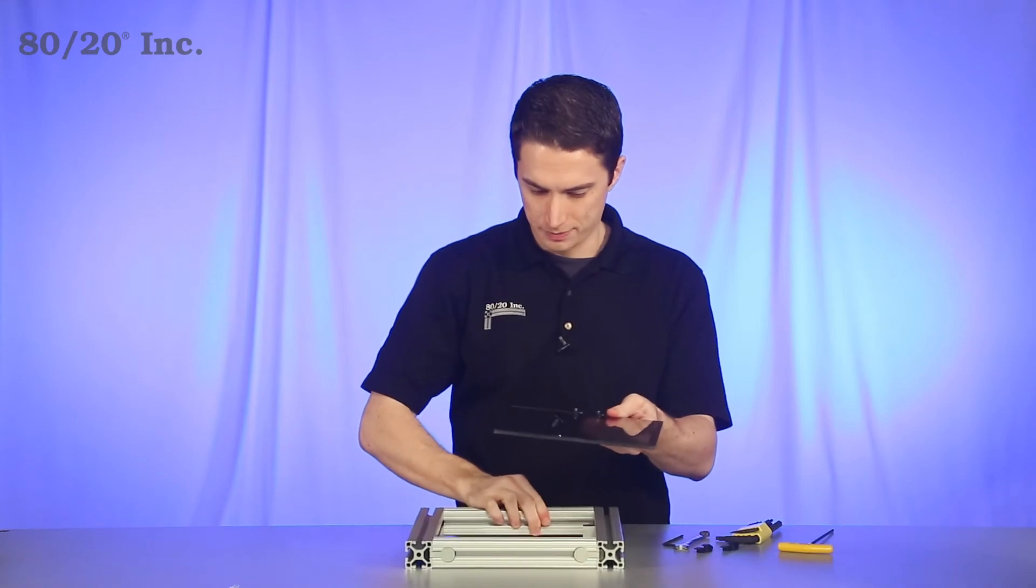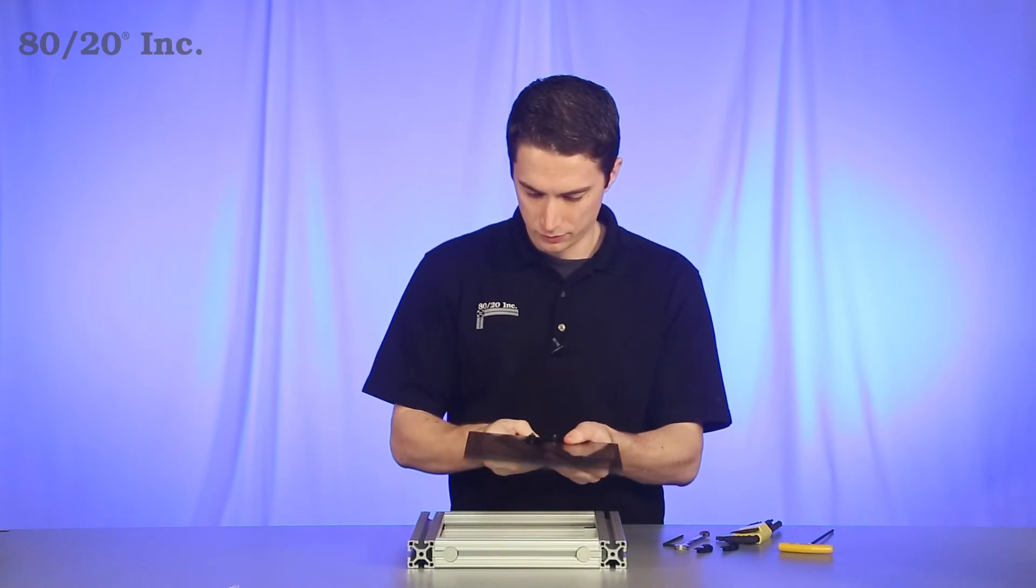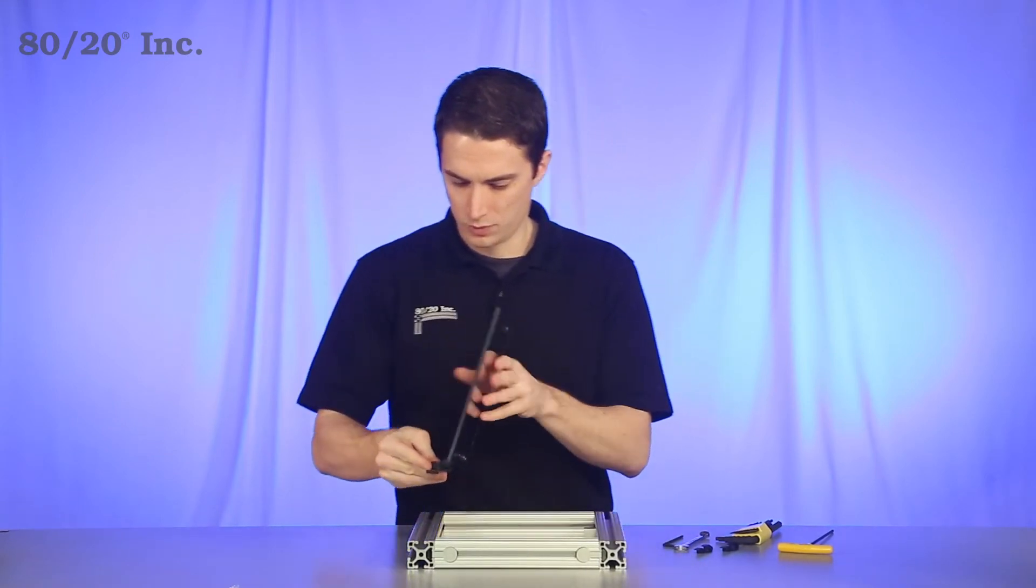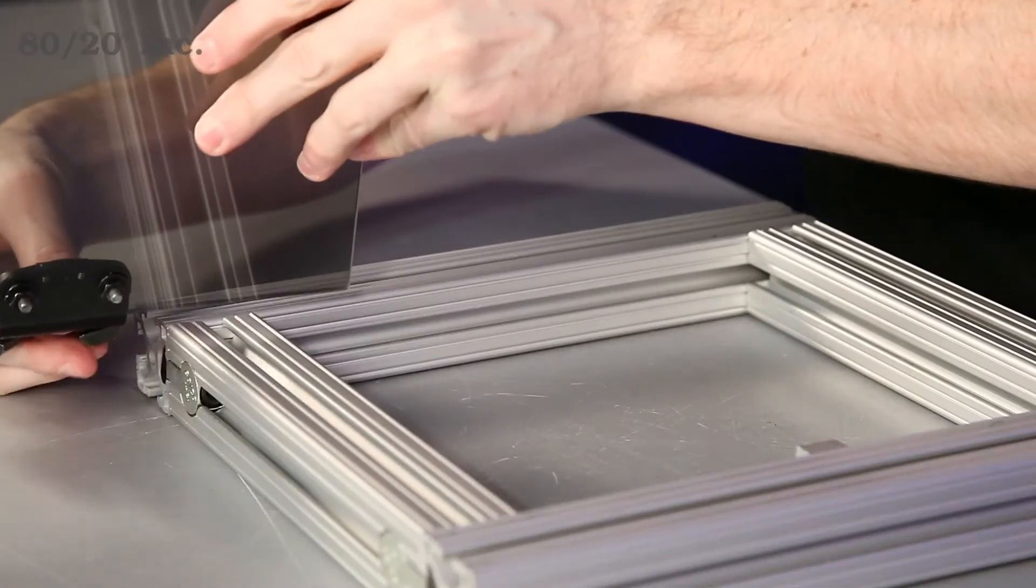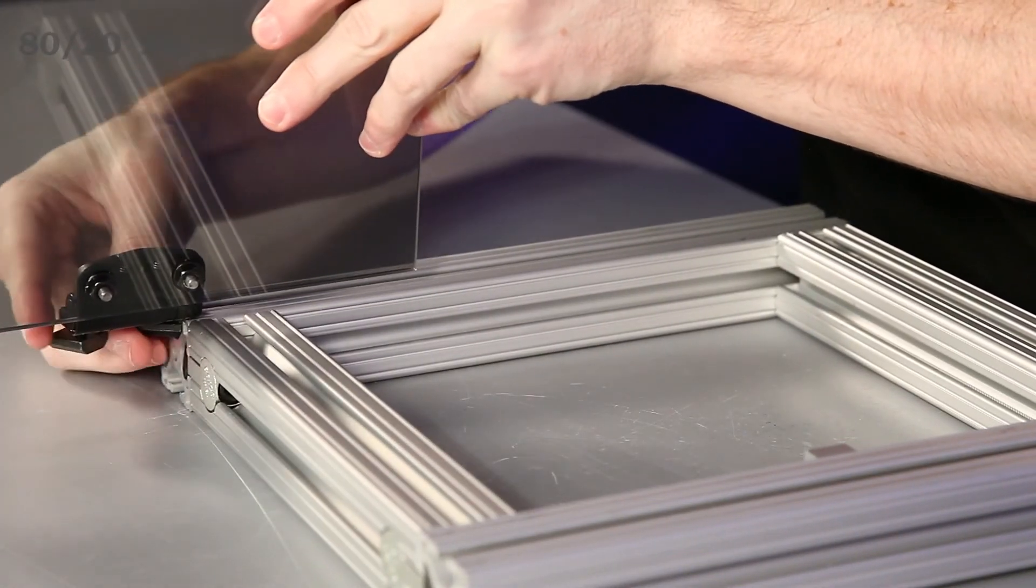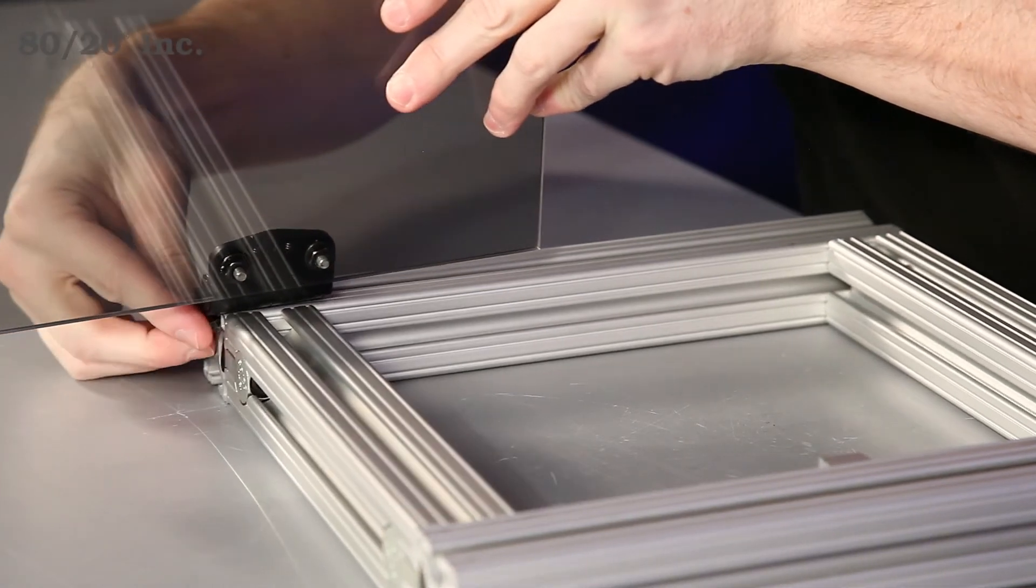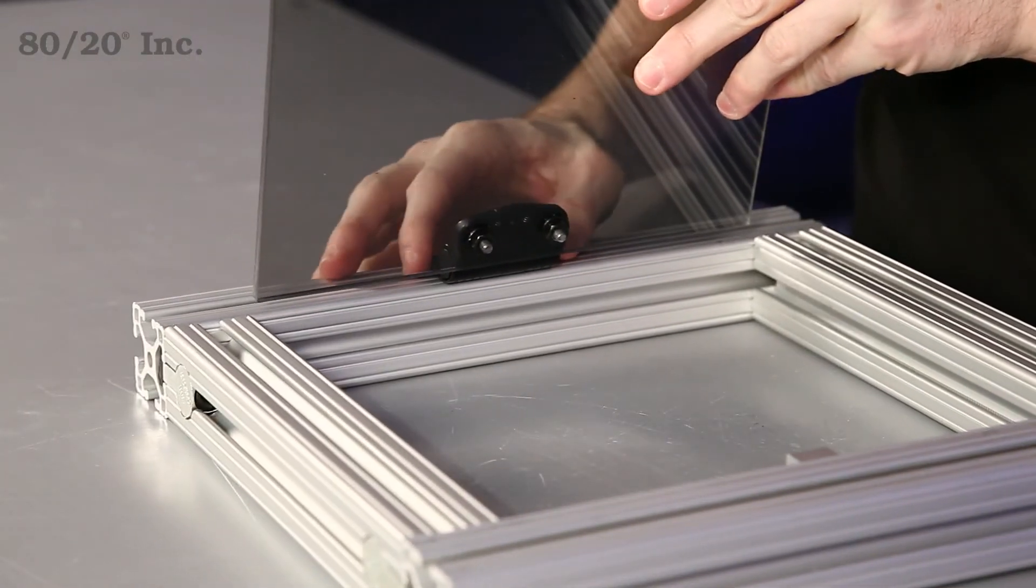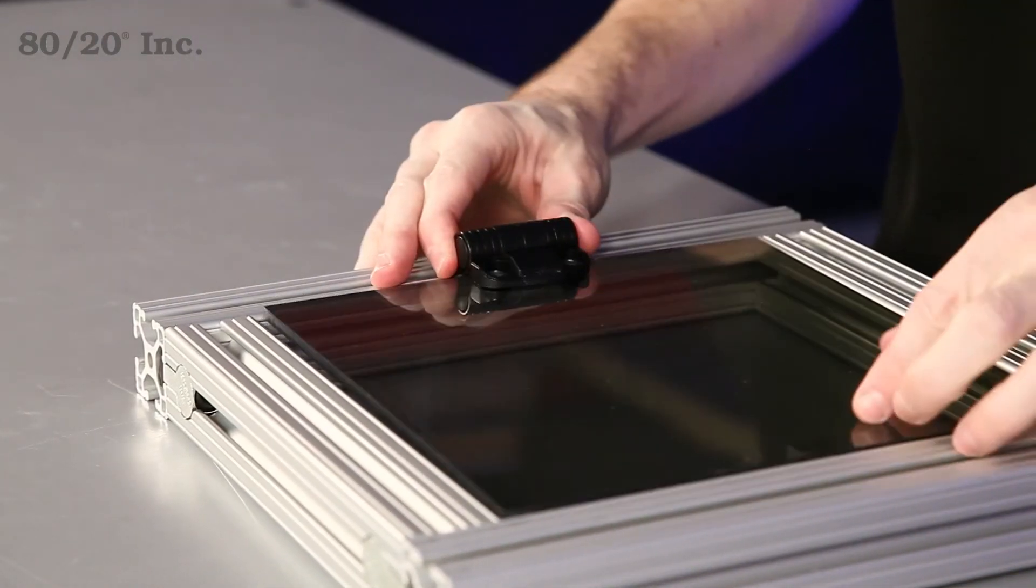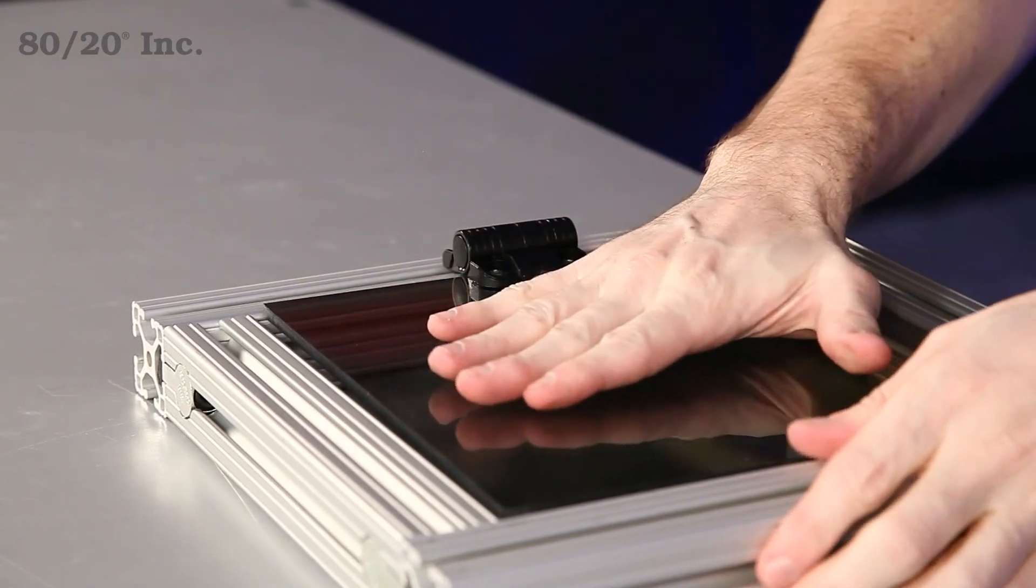So we'll grab our frame and lay it flat here. We'll get our hinge lined up and just slide the T-nuts into the open T-slot. We'll move that into position. We'll lay that flat and that stopper will hold it into place for us while we tighten it down.